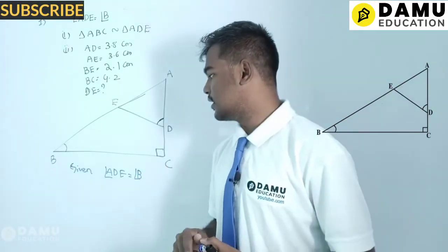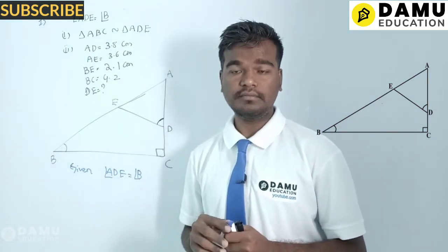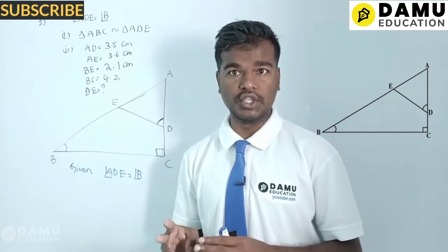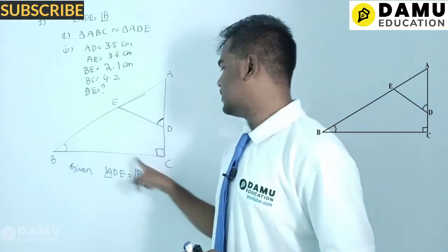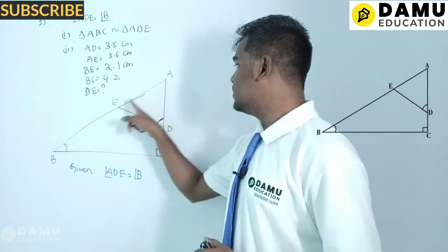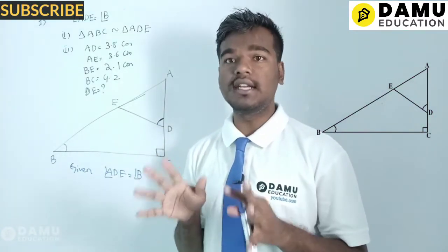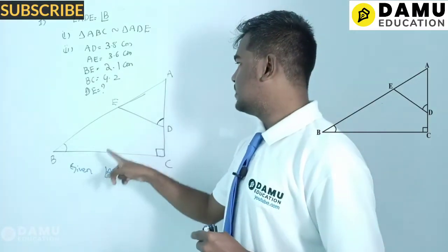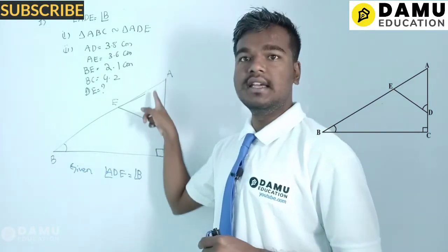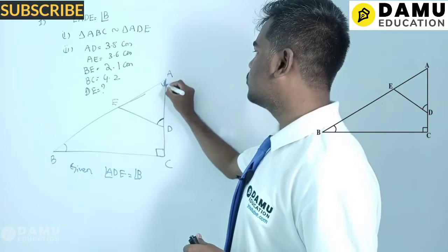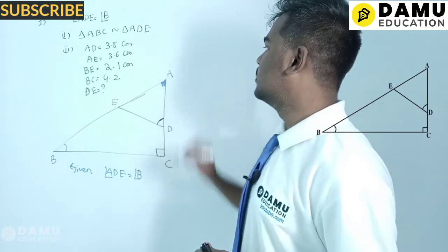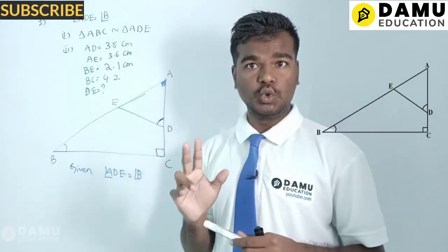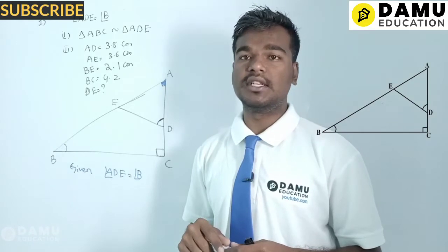Here, already one angle is given. Can we take three equal angles? In triangle ABC, there is a 90-degree angle, but in triangle ADE there is no 90 degrees, so we cannot use that as a second angle. However, in triangles ABC and ADE, angle A is a common angle. So we can use two angles — that is the AA similarity criterion.